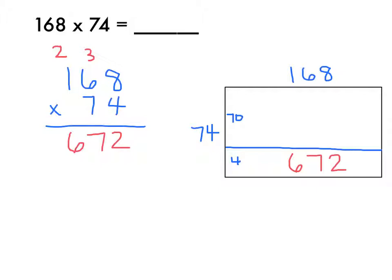And I'm going to get that 168 times 4 is 672, which makes sense. Because if I had 100 times 4, that'd be 400. And 60 times 4 would be 240. And 400 plus 200, that's already in the 600s. So this is making a lot of sense that it would be 672.